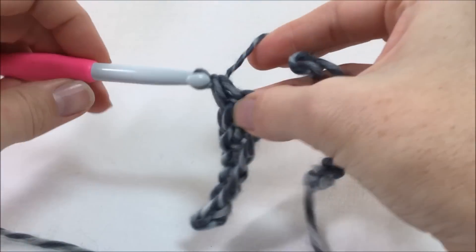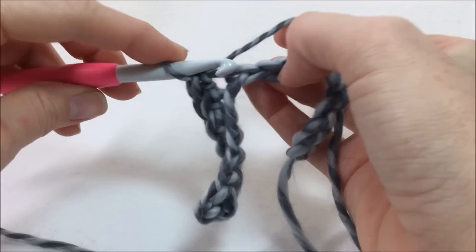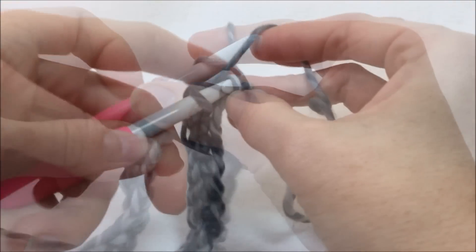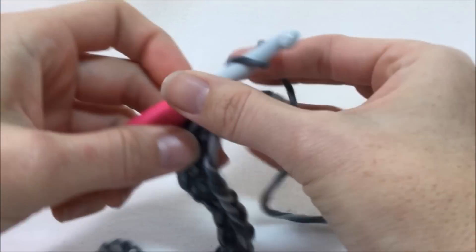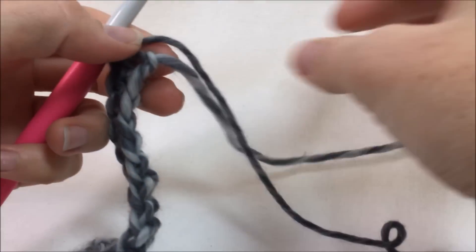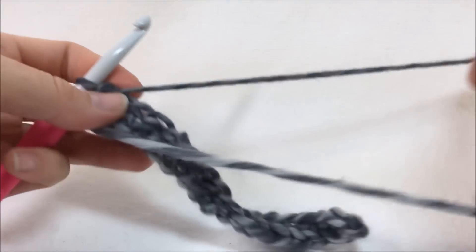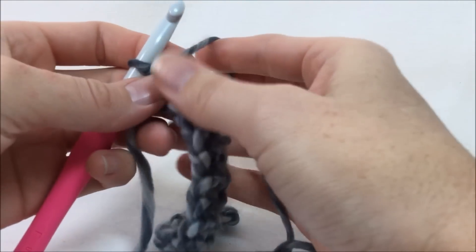So you're going to do 62 single crochets while I finish my 17, and then we will come back and work row two. The last stitch of row one. I almost said round. That's why my row sounded weird.